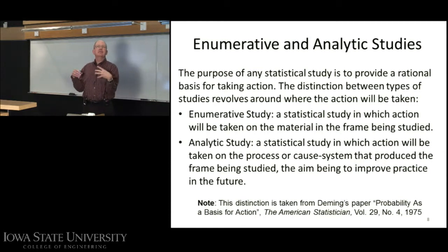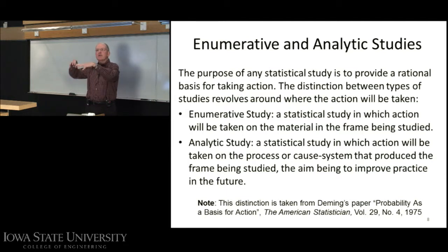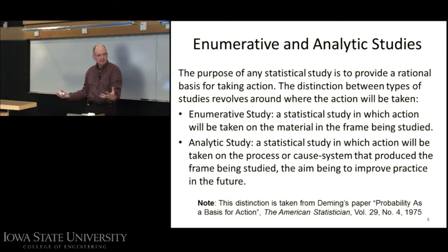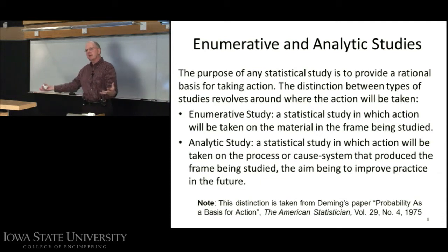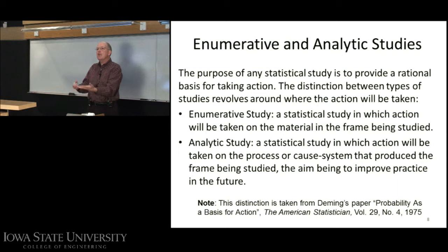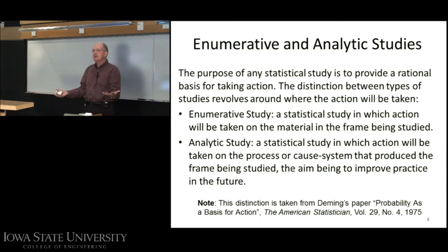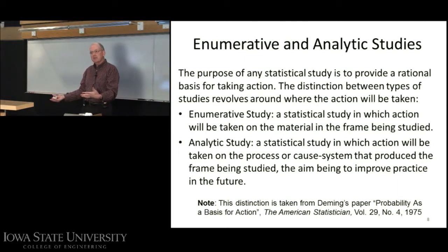Remember Stats 101 — we had a population, and then there was a frame, which was the part of the population that was accessible to us, and then we had a sample that we drew from our frame. So what Deming is saying is we want to take an action on the frame or population from which we drew our sample. That's what all those 'let x₁ up to xₙ be a random sample' problems were about.